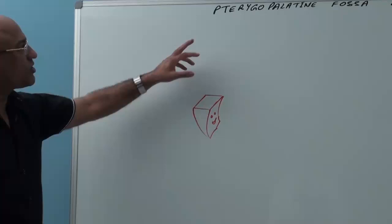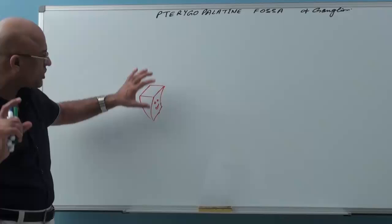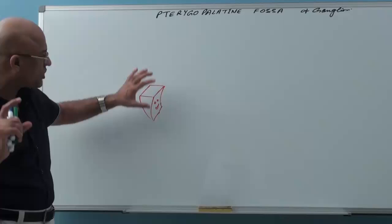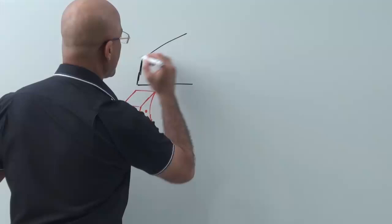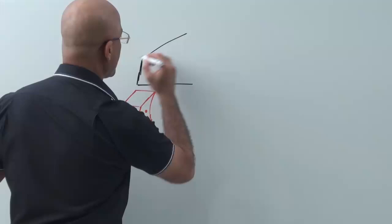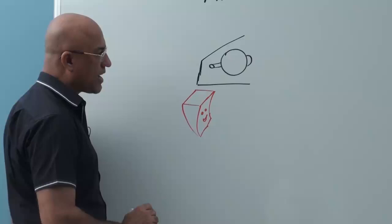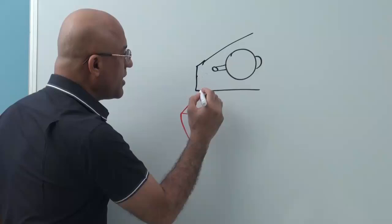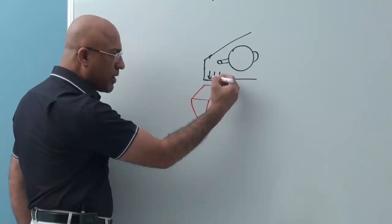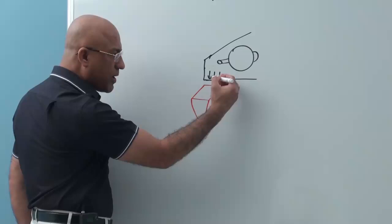The first question is: where is this pterygopalatine fossa exactly located? What is its exact position in head and neck? Let me draw some familiar structures. For example, the orbit — here is your orbit, which houses the eyeball and related structures. You can see in this diagram that the pterygopalatine fossa is basically just inferior to the apex of the orbit.